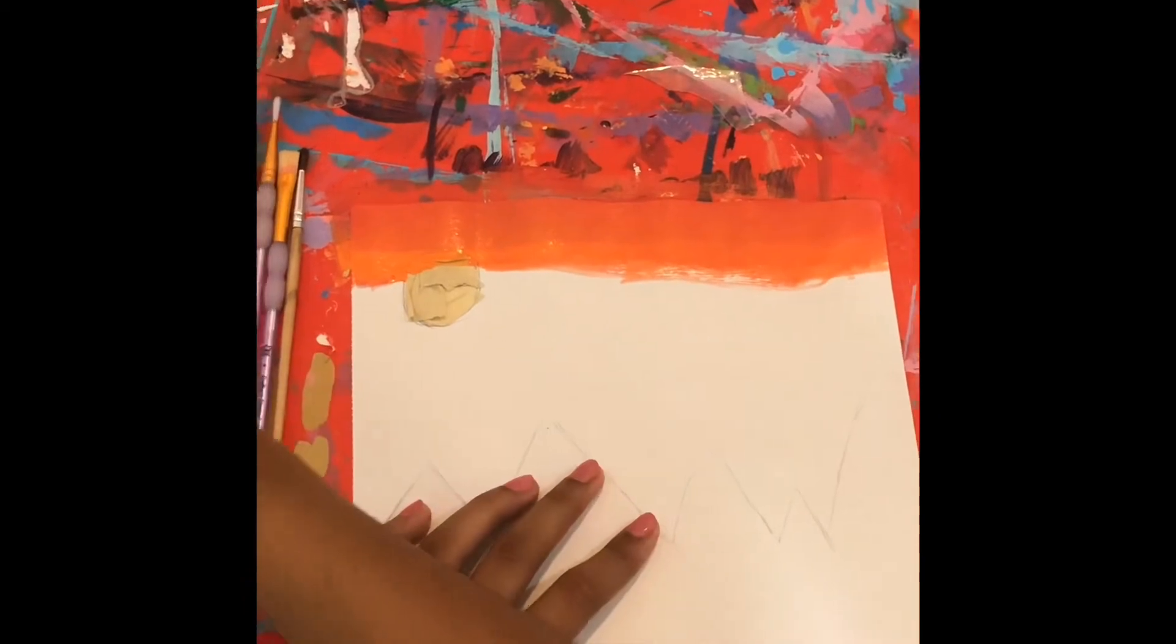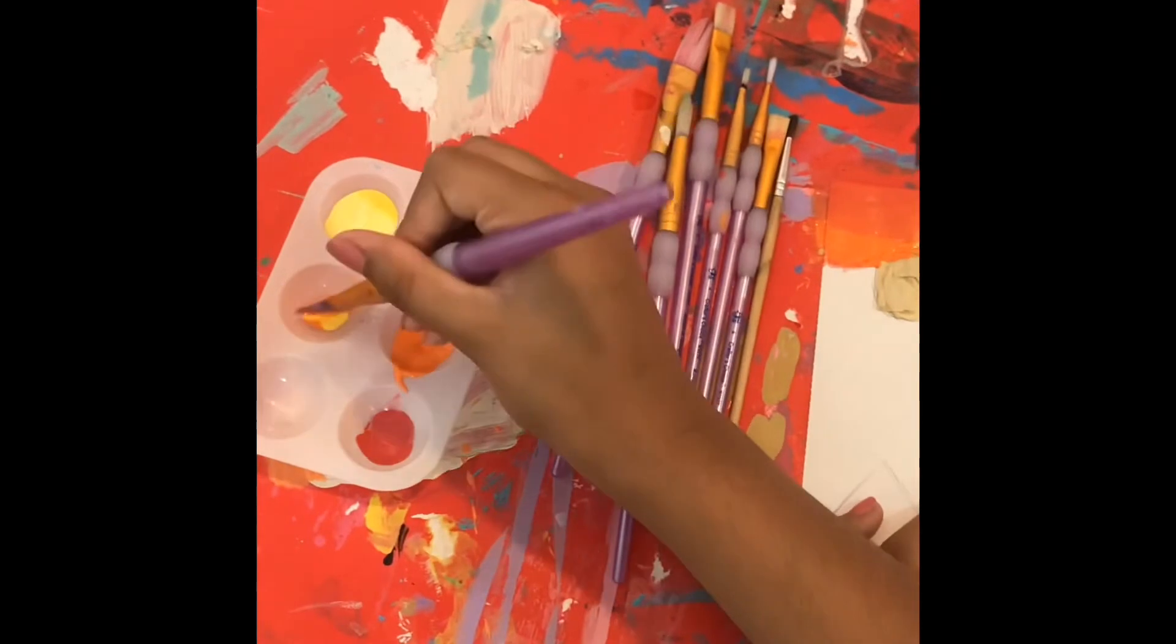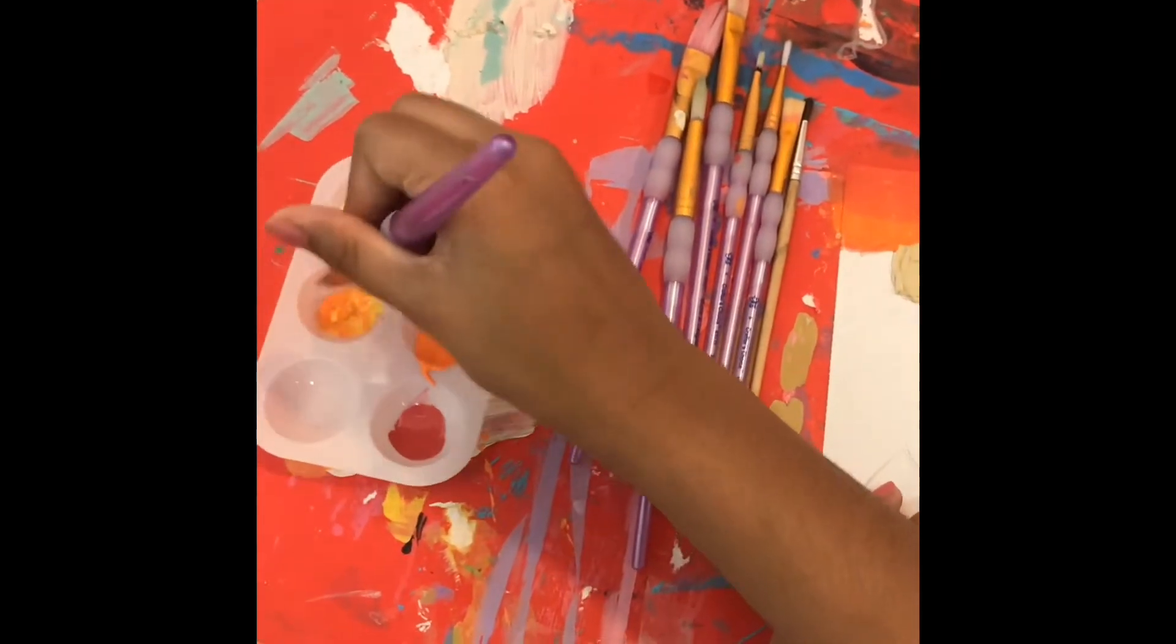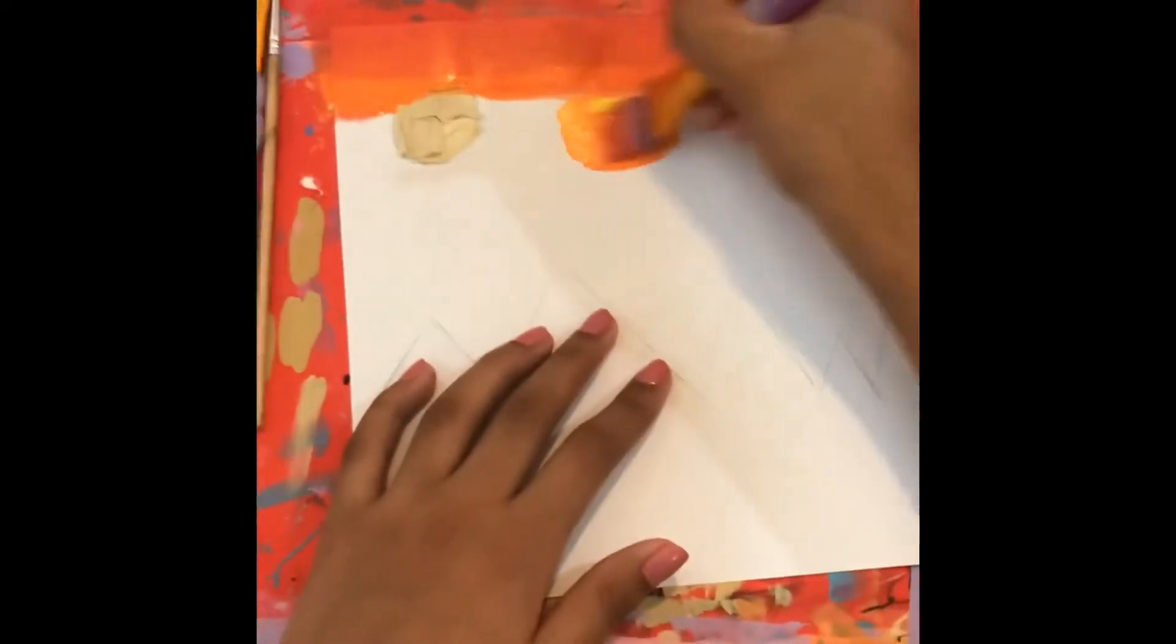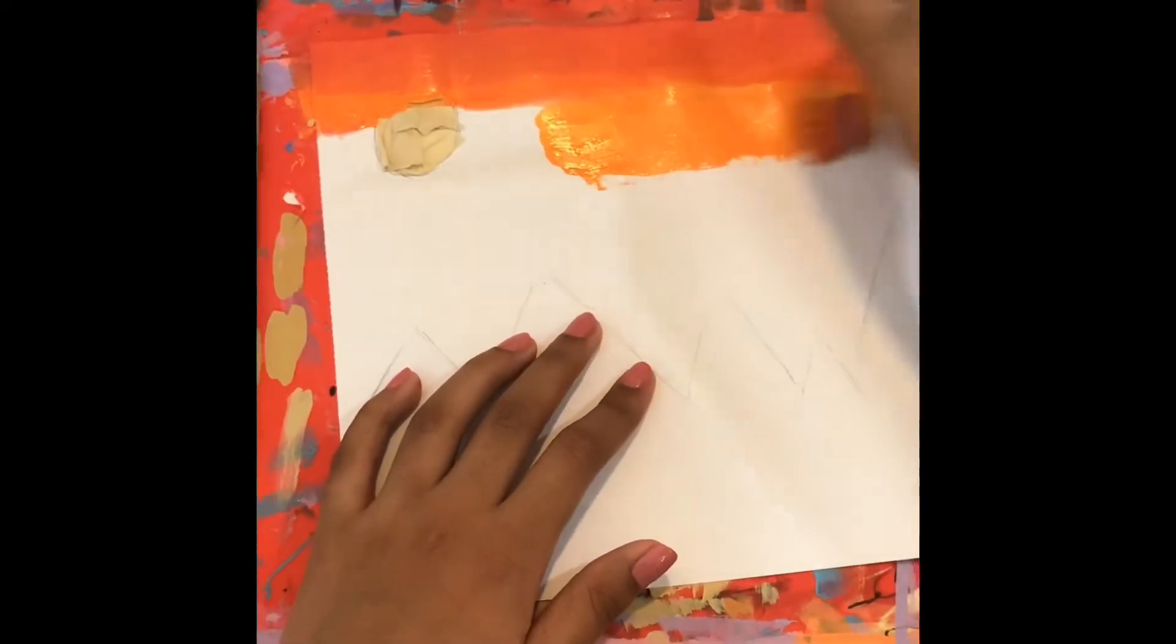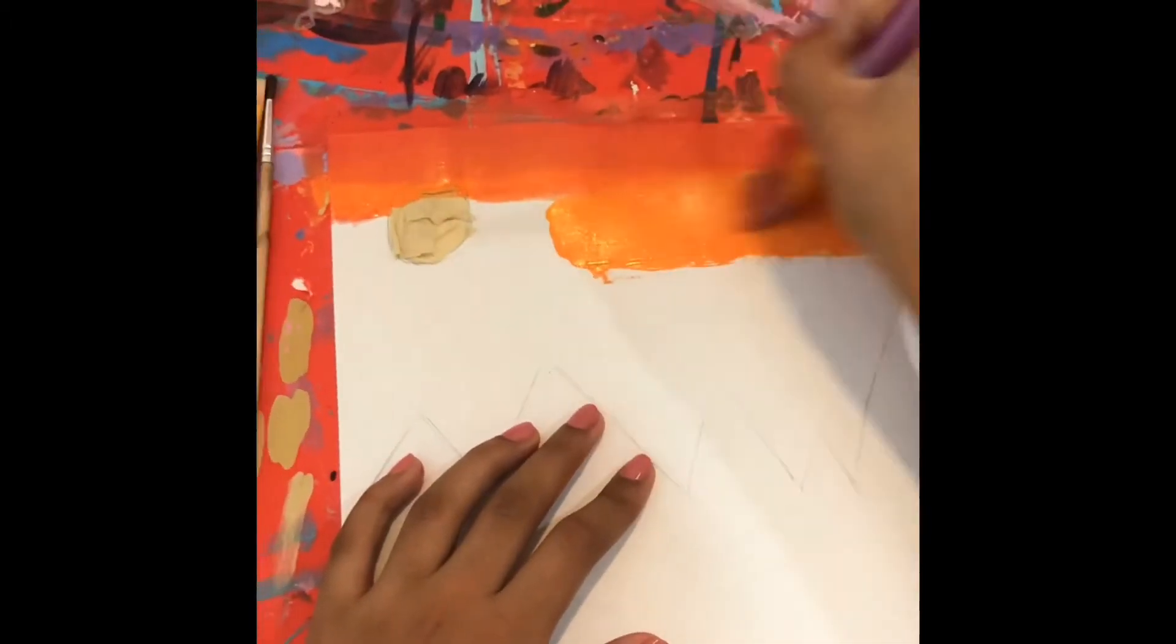Then you want to take some orange on a separate part of the palette and mix it with a bit of yellow to get a lighter shade of orange. Then you want to take it and blend it. As you see, it's getting to more of a sunset-like corally orange color.